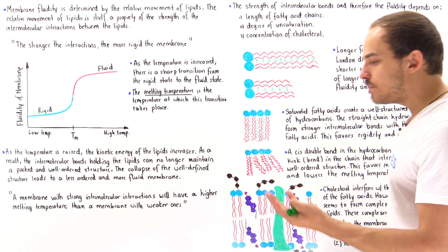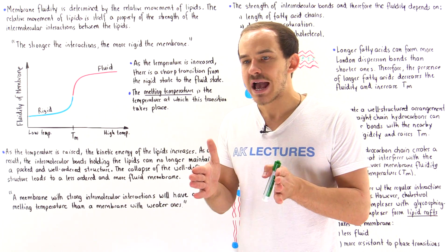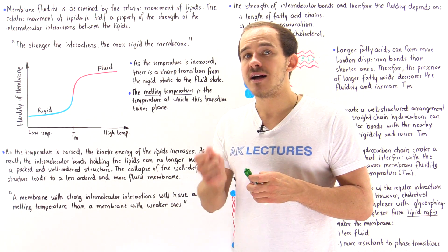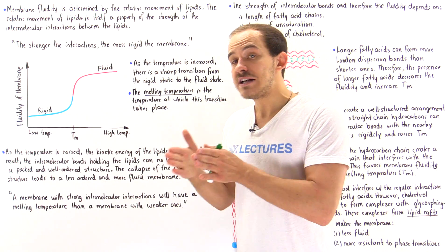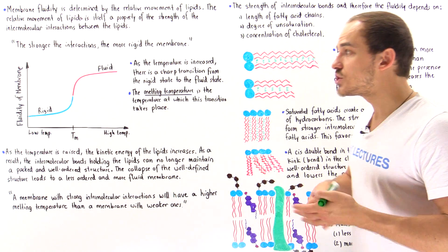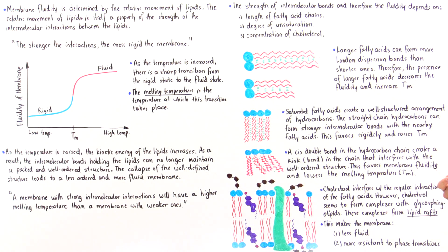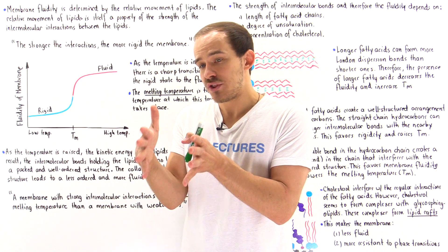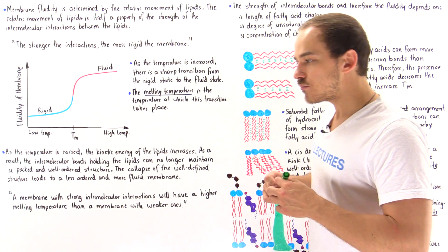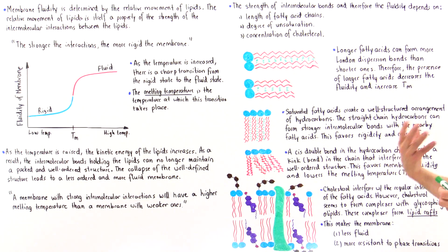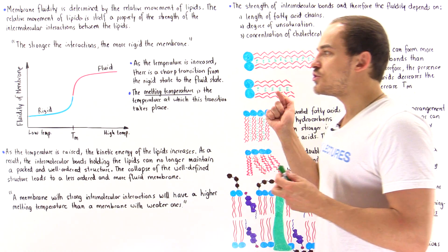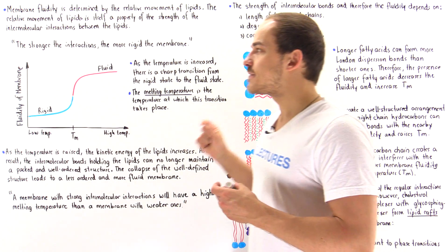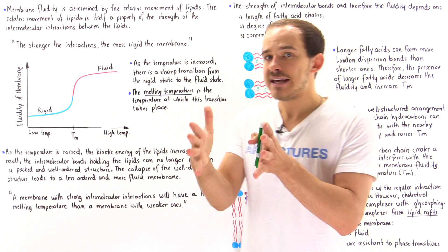A lipid raft is a section of the membrane that contains a high concentration of cholesterol molecules as well as glycophospholipids. Because we have a high concentration of these lipids within that area of the membrane, it ultimately increases the rigidity and makes that region less fluid.